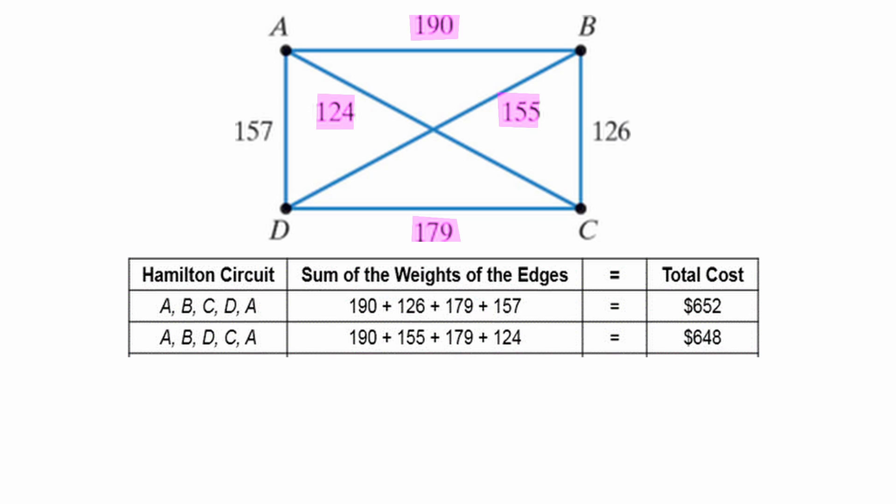Then we have the ACBDA version, which is 124, 126, 155, and 157 for a total of $562.